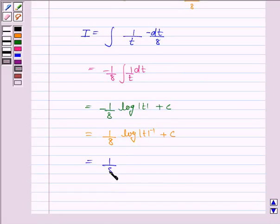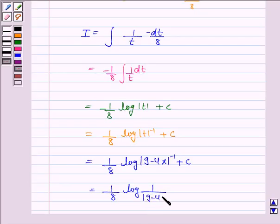it becomes 1 upon 8 log t is 9 minus 4x square to the power minus 1 plus c. And it is again equal to 1 upon 8 log 1 upon 9 minus 4x square plus c.